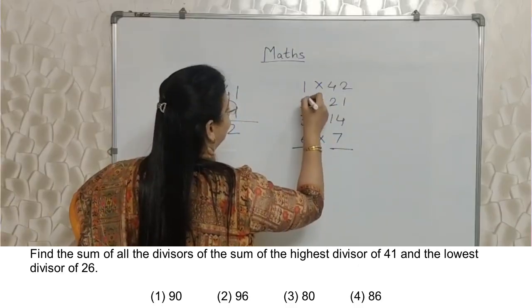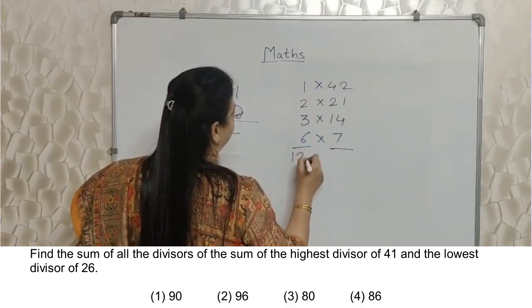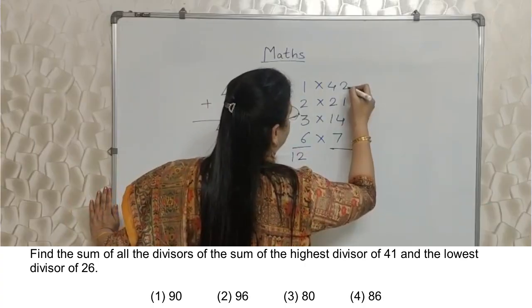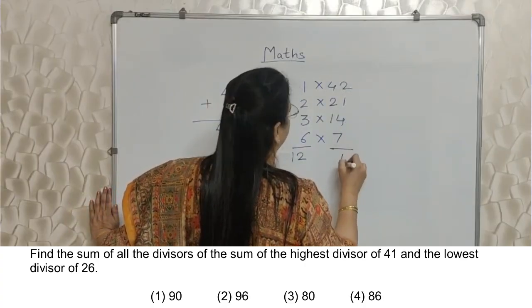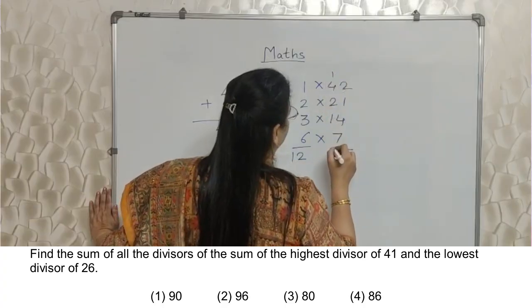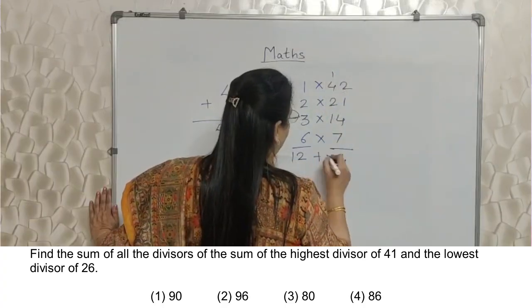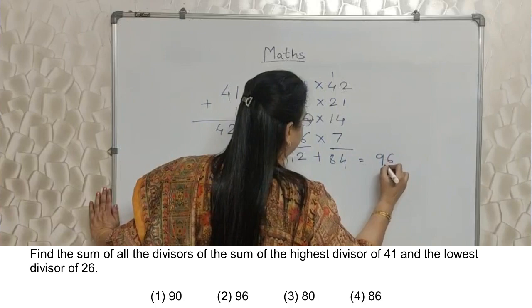Simple, isn't it? So 12, and this is 3, 7, 7, 14. Now we add this. 96 is the answer.